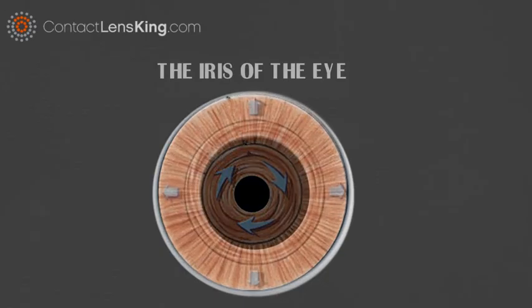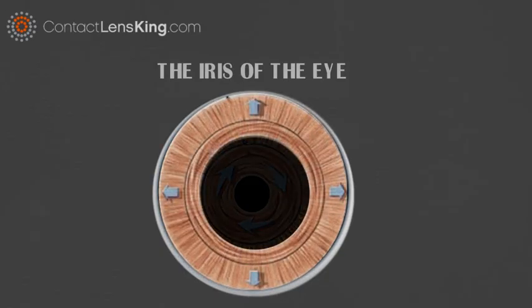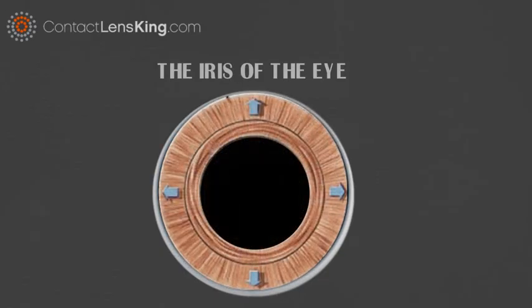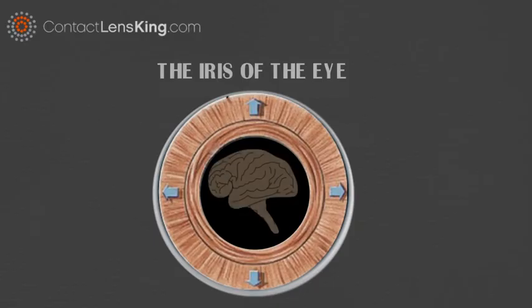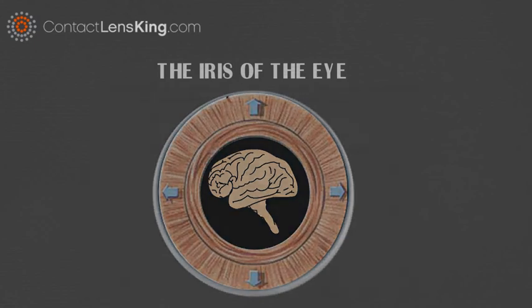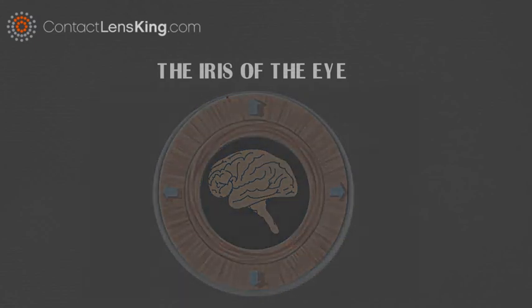it if there is not enough. This is an involuntary function controlled by the brain. The iris not only physically defines us, but plays a critical role in providing us the ability to see.